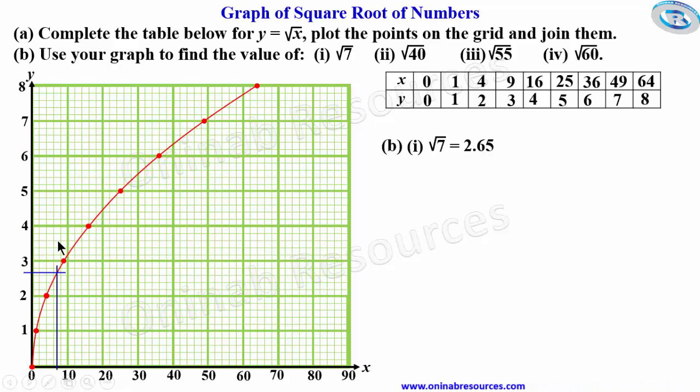Then part B of the problem, √40. This is 40. We draw the line to touch the curve. It touches it here. At the point of intersection of the line and the curve, we draw to the y-axis and read. This is 6, 6.2, 6.4, and that is about 6.3. So we'll record it as 6.3.